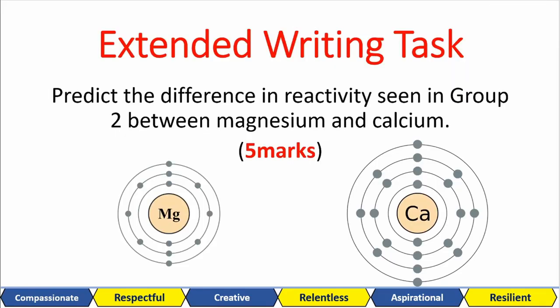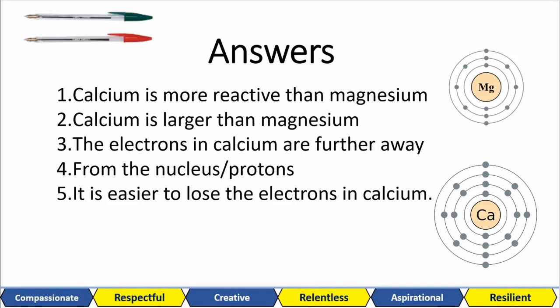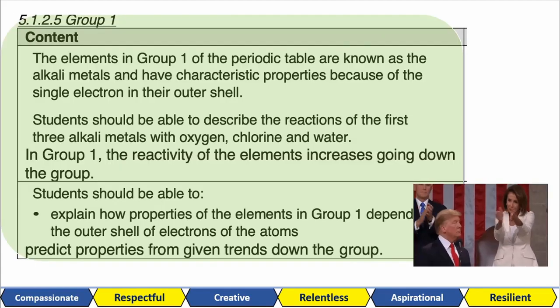Here is a five mark question based on group two. Again, your group two isn't part of the syllabus, but they could ask you to apply your knowledge from group one and apply it to group two. This question is an extended writing task and it's asking you to predict the differences in the reactivity seen between group two elements, magnesium and calcium. You're just applying what we did for group one. The only difference here is that they're losing two electrons and not one electron. Pause the video. Do your thing. This is five marks. And here are the answers. Calcium is more reactive than magnesium because the calcium is a larger atom than magnesium. So the electrons in calcium are further away from the positive electrostatic forces. You can see that from the nucleus or the proton. Therefore, it is easier for it to lose its electrons.